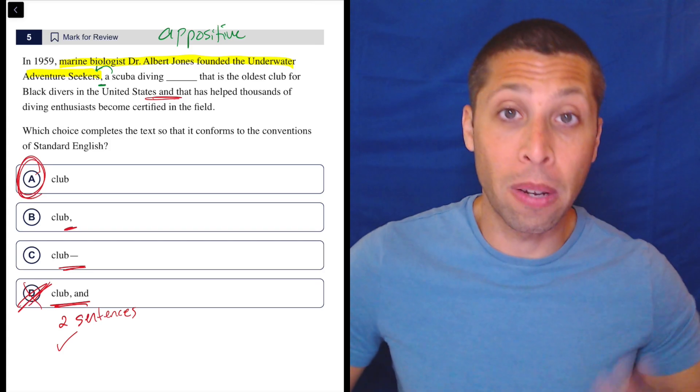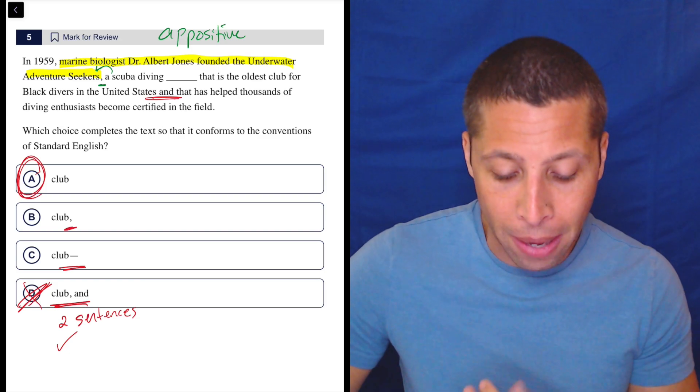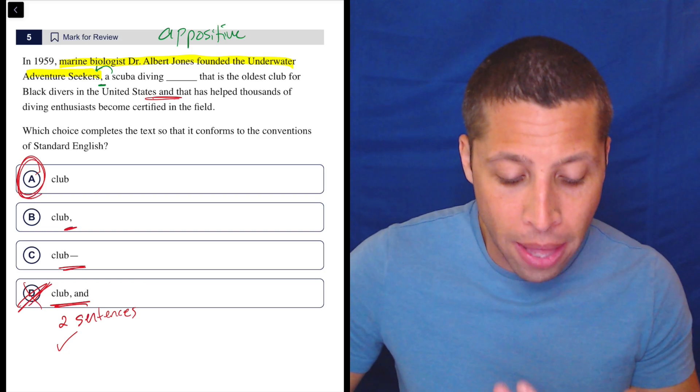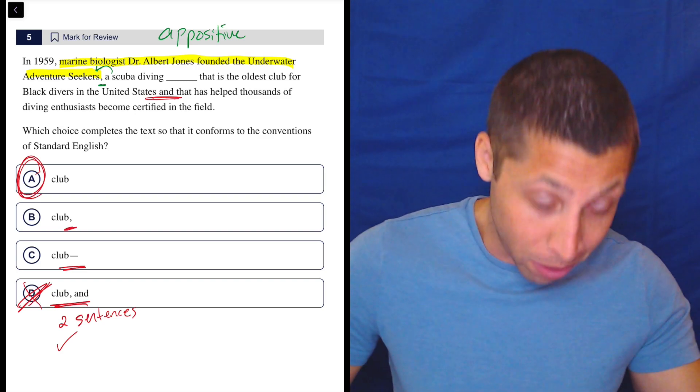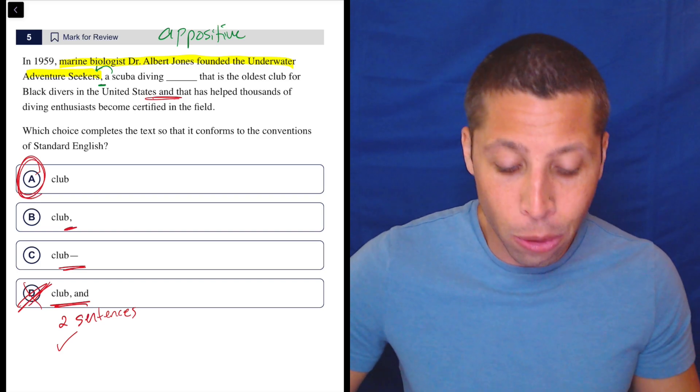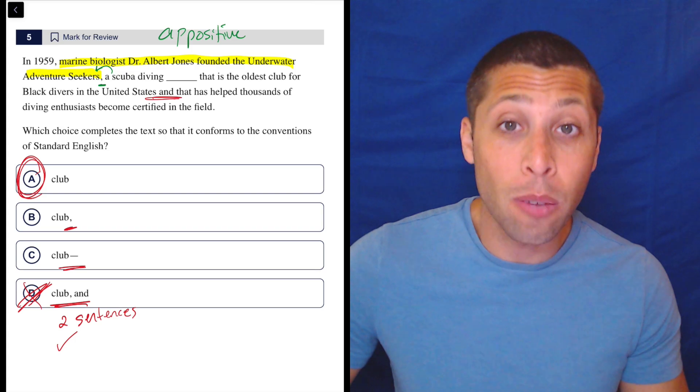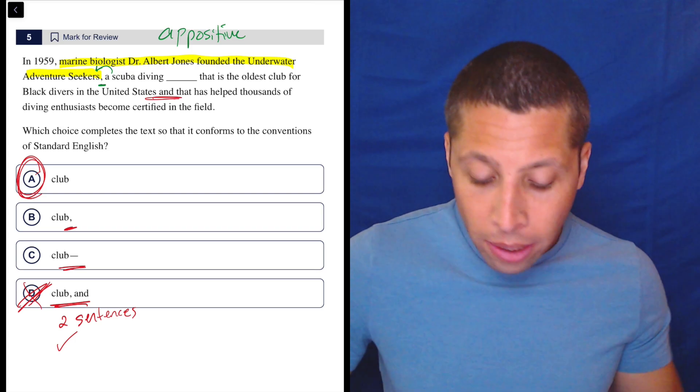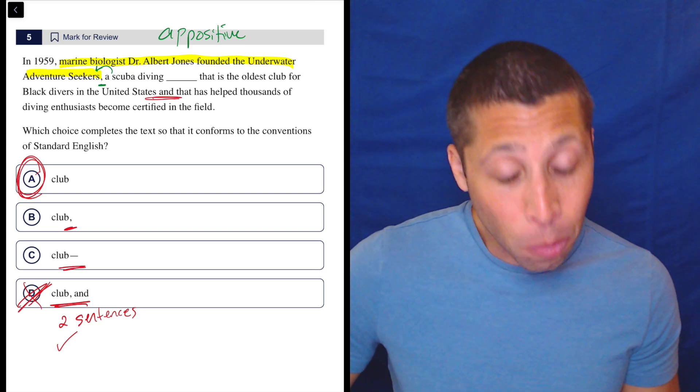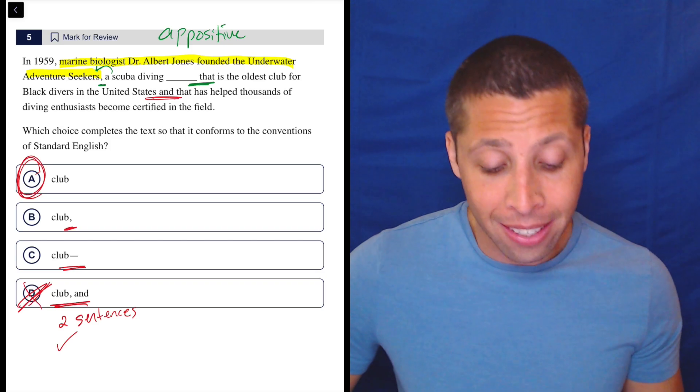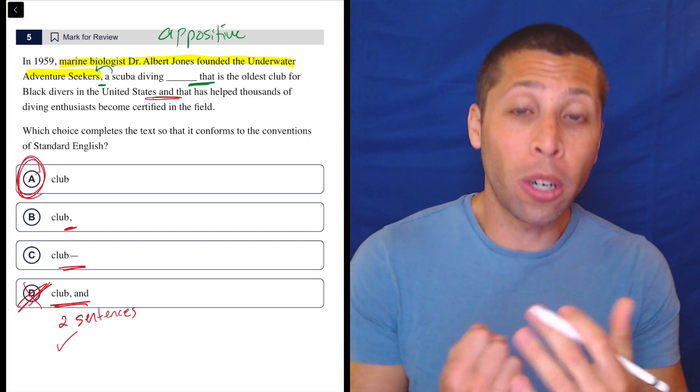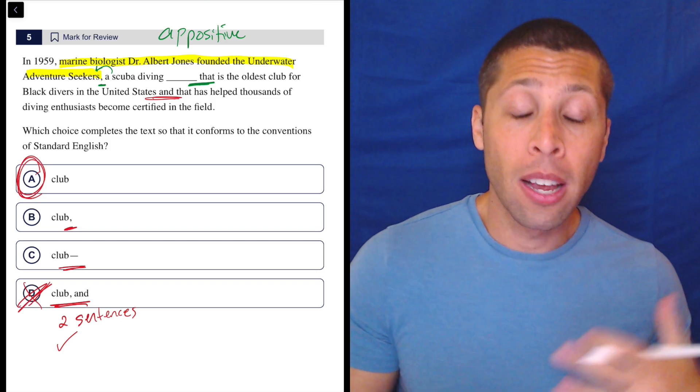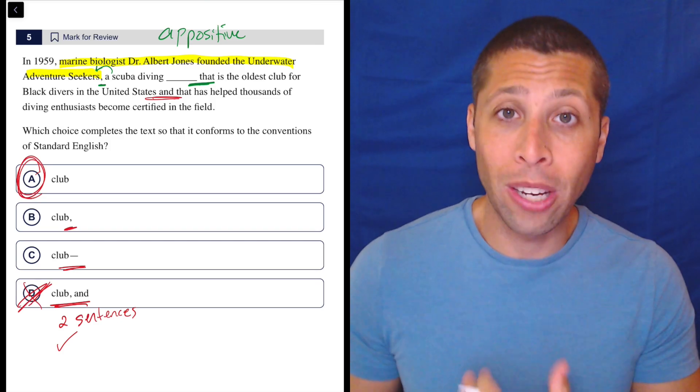And that's because it's a bit of a compound with two things that we're using to describe it. It is a scuba diving club that is the oldest club for black divers in the United States and it is a scuba diving club that has helped thousands of diving enthusiasts become certified in the field. That's basically what we're saying. And so there's really no punctuation necessary. And that doesn't surprise me because the word 'that' rarely gets punctuation in English. It is a connector word that allows us to add on an extra clause, but it doesn't really get punctuation with it.